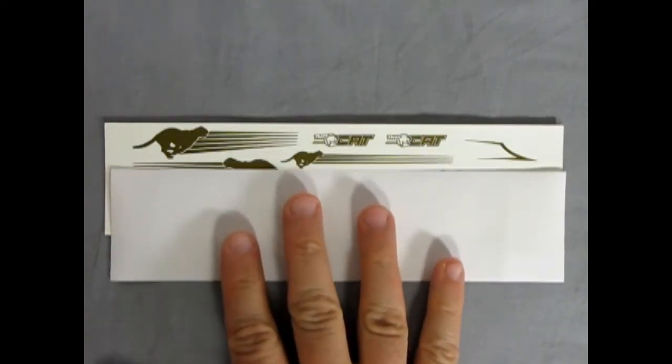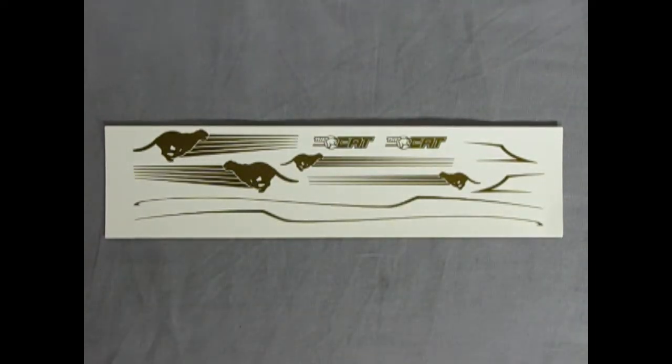Last but not least we have this amazing decal sheet. And look at that nice gold on here. This says the cat. And then it has all these different cougars running. And this would look really great if you painted your car black. Much like this earlier box art shown here.